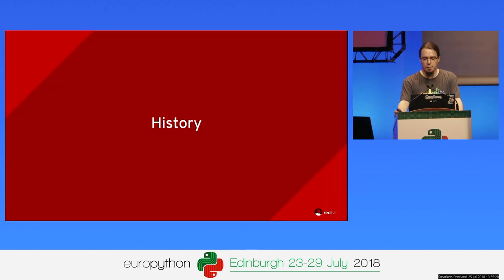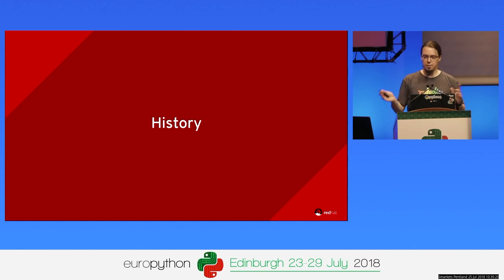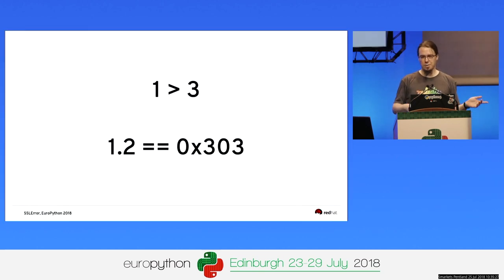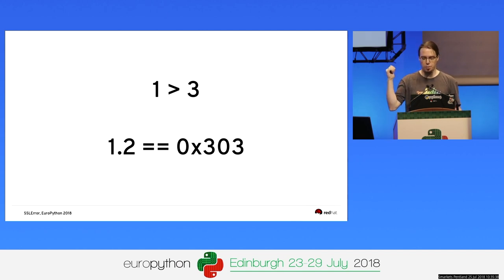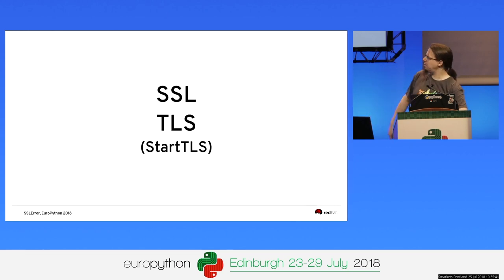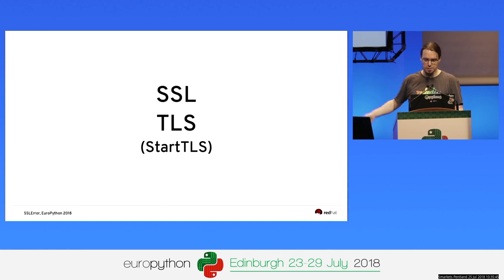History. SSL is sometimes a bit confusing because you have SSL, you have TLS, and actually one is greater than three. It's the first thing that confuses people — that one is bigger than three, and TLS 1.0 or 1.2 is actually hex 0x303. SSL, TLS, sometimes StartTLS — I won't get into that, it's actually not that complicated.